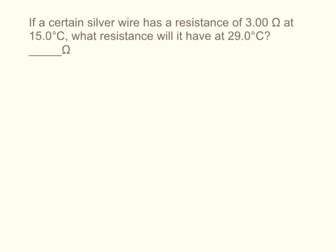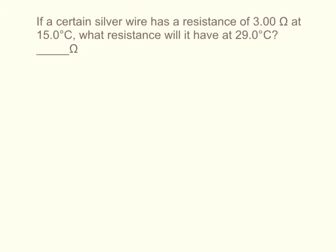The equation for resistance as it changes with temperature is resistance equals the original resistance R0 times 1 plus alpha times T minus T0.